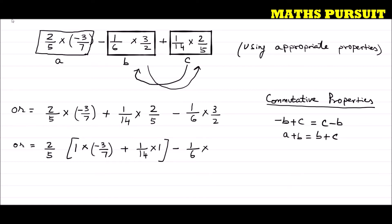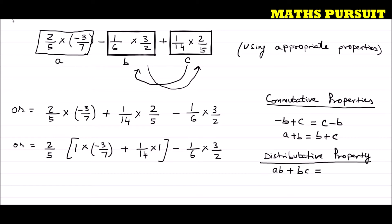This move happened using the distributive property — we took 2/5 as common outside. Distributive property says that a×b + a×c can be written as a×(b + c). If b is common in a×b + b×c, we can factor it out. This is the distributive property.